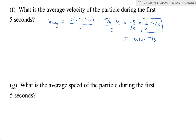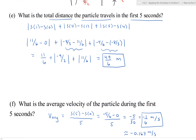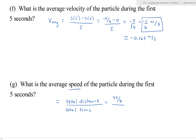Part g: What is the average speed during the first five seconds? Average speed is total distance divided by total time: (49/6) / 5 = 49/30 meters per second, which is approximately 1.63 meters per second.